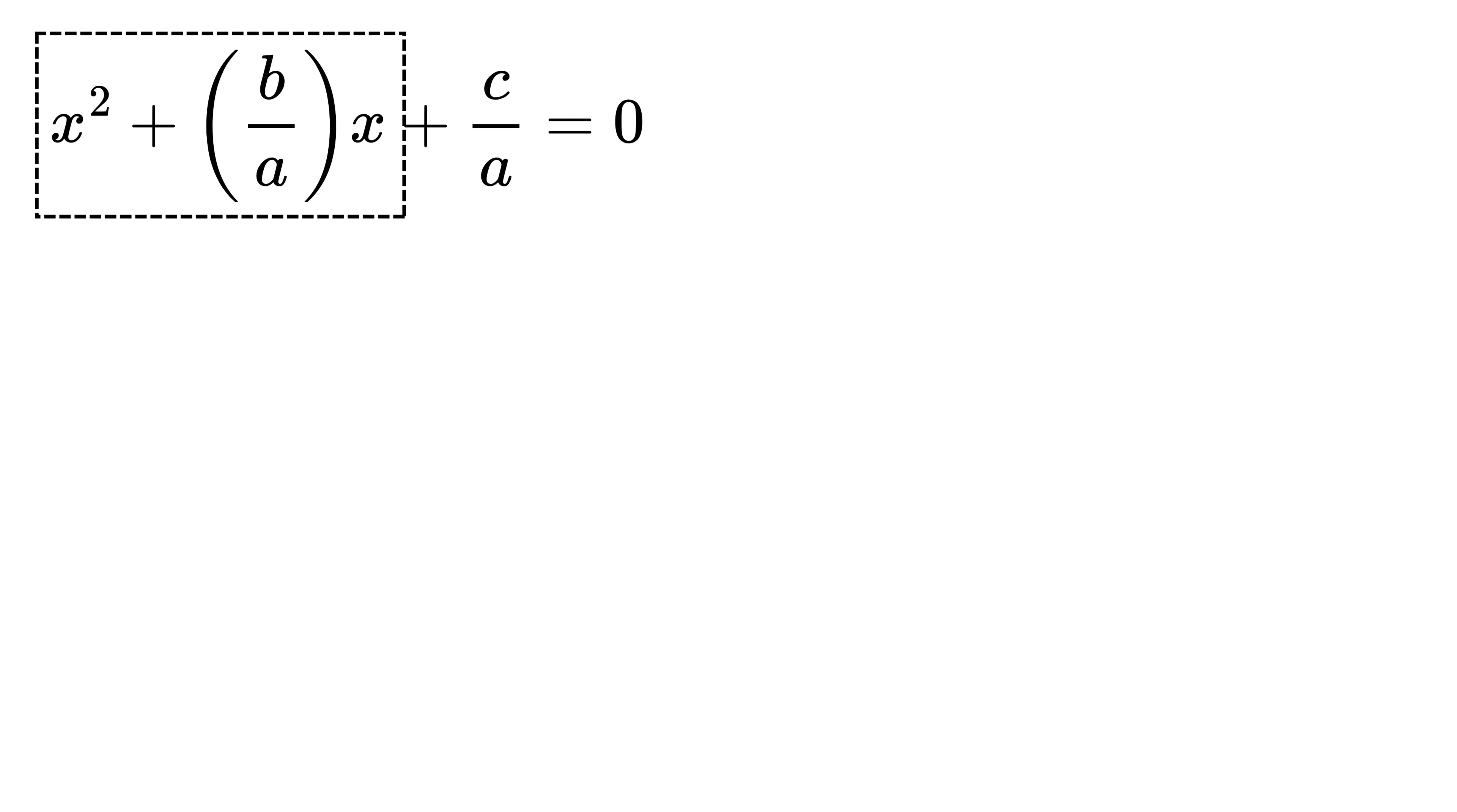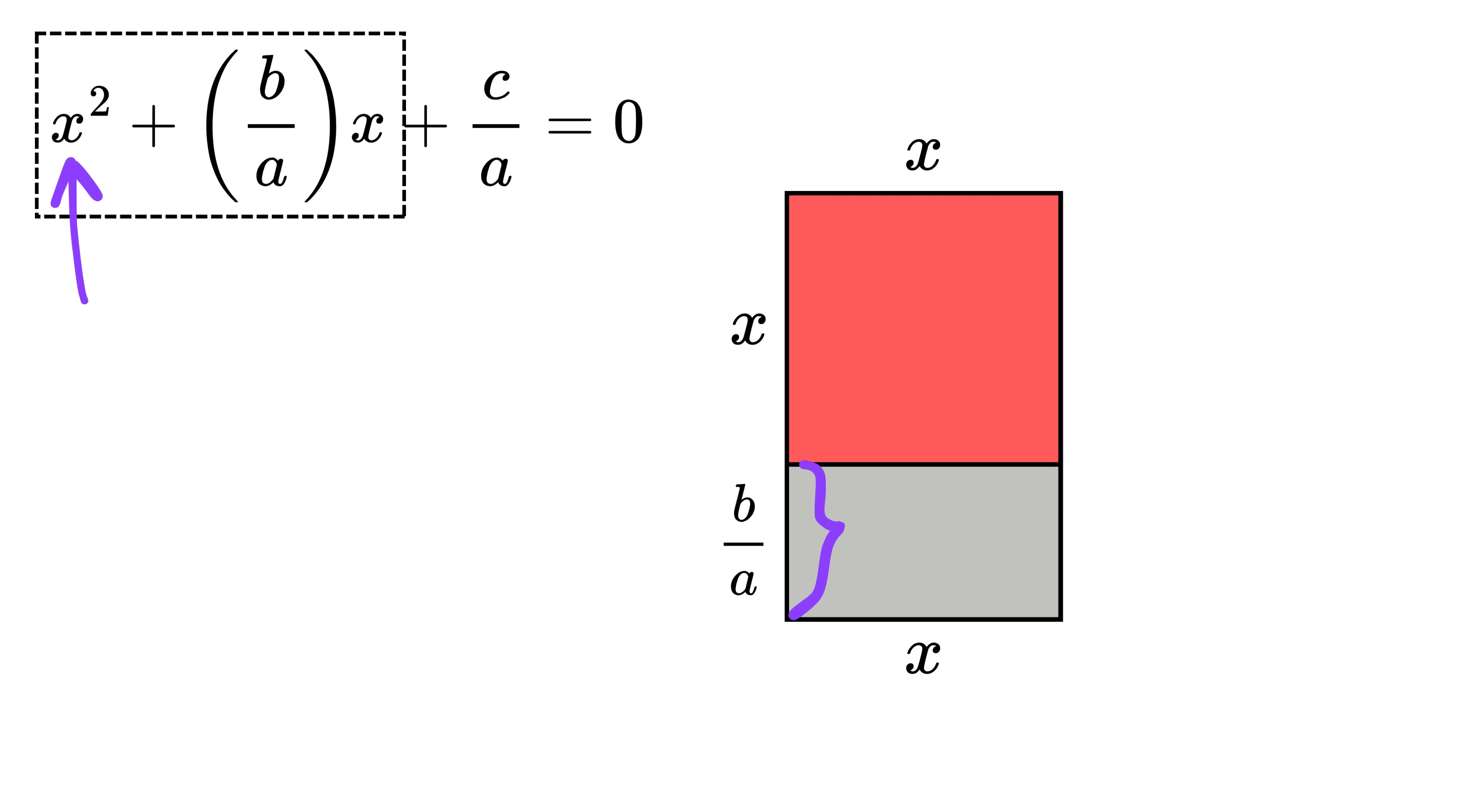Imagine drawing a square of side length x such that its area is x². Next to it we place a rectangle whose one side is x and the other side is b/a like this, so that its area is (b/a)x.